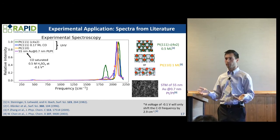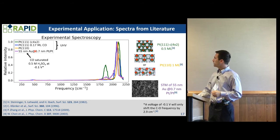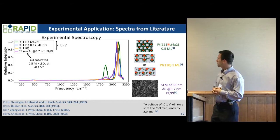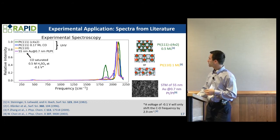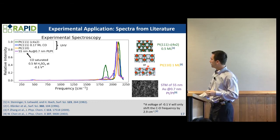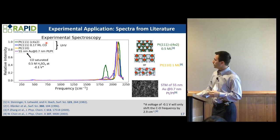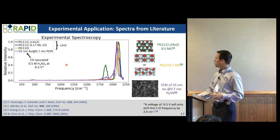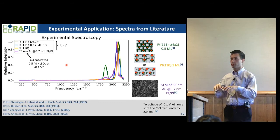How does this evaluate on actual experimental spectra? Here are four examples of experimental spectra. We have platinum CO in the C(4×2) configuration — basically half a monolayer on platinum, both on ATOP and bridge sites — shown in green. In yellow is CO on platinum 110 in a single monolayer, all ATOP sites. In blue is CO at low coverage on a platinum 111 surface. And in purple is CO on platinum nanoparticles in a sulfuric acid solution. This shows what the spectra looks like as intensity versus frequency.